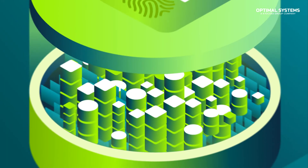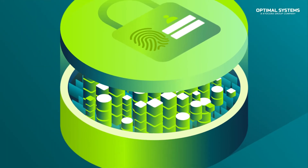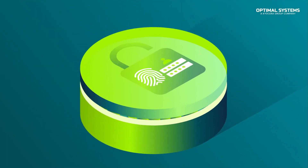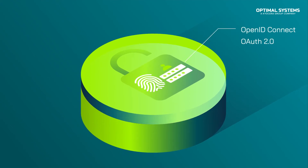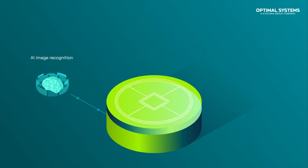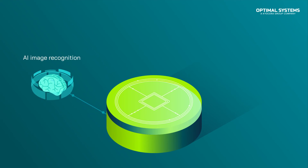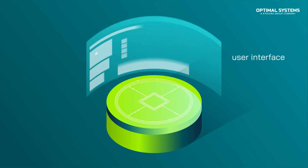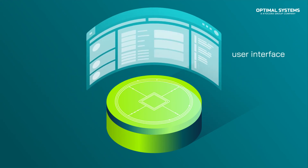UVIS Momentum integrates seamlessly with any identity and access management provider that follows open standards. Connect third-party services like AI image recognition, e-signature, document capture, or SAP. And if you need a user interface for your application, our client-side framework helps you quickly create one.